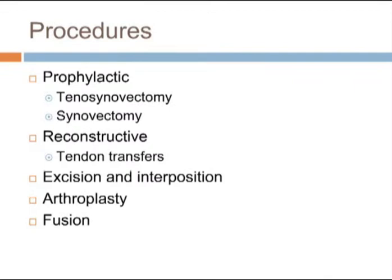Surgical procedures can broadly be categorised as: prophylactic surgery — early synovectomy and tendon excision to halt disease progression and prevent rupture; reconstructive procedures such as tendon transfers following rupture; excisional procedures with or without soft tissue interposition for pain control and joint stability; arthroplasty; and fusion.